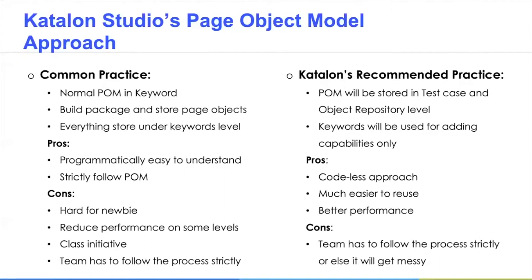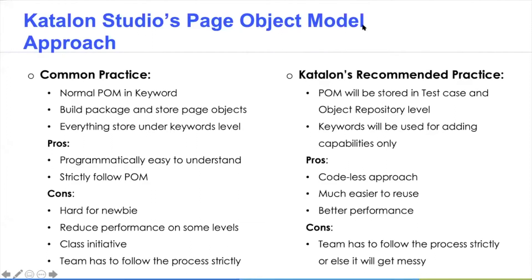Another obvious disadvantage is class instantiation — using the 'new' keyword if you're familiar with Java — and the team has to follow the process strictly, or the Page Object Model is going to get messy really soon. Because of those disadvantages, Katalon recommends this practice: the Page Object Model should be stored at the test case and object repository level, and keywords are used only for adding capability. This approach helps you have a more codeless approach, is much easier to use, and offers better performance. The disadvantage is your team still has to follow this process strictly, or the project will get messy.